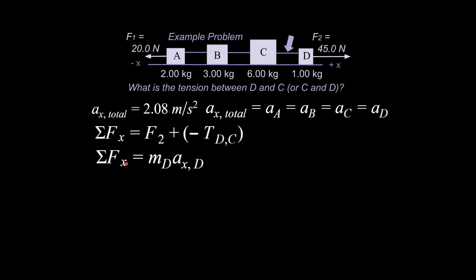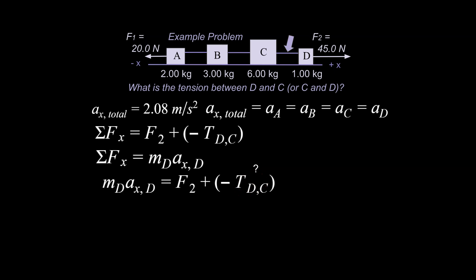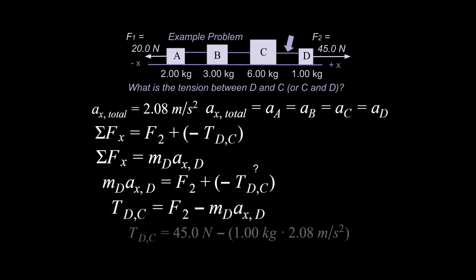We set the two sides equal and consider what we know and don't know. The acceleration is not zero — we already solved for it — and the tension is unknown, so we isolate for tension and plug in our numbers at the end, including units, to get our answer.